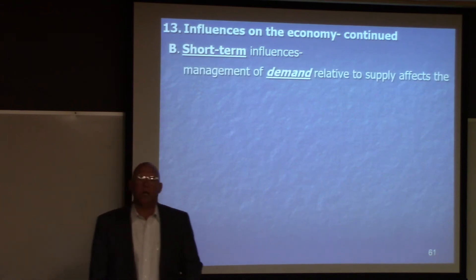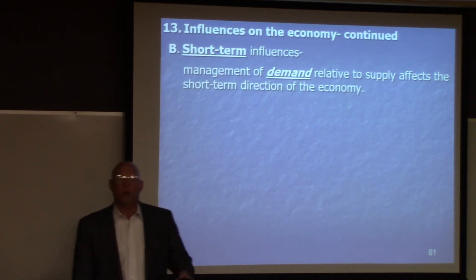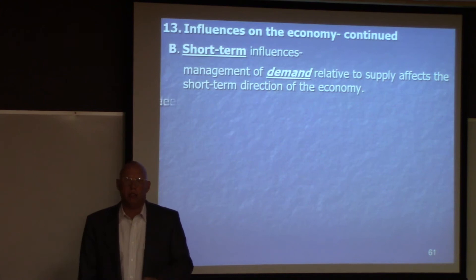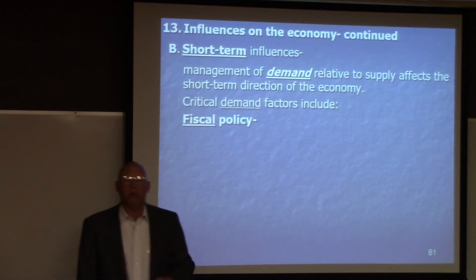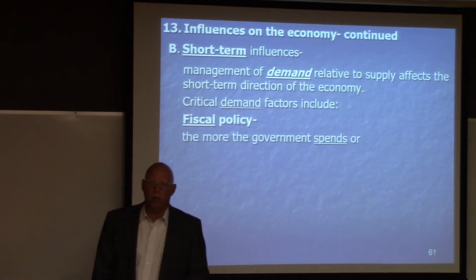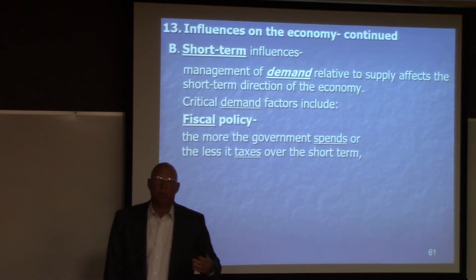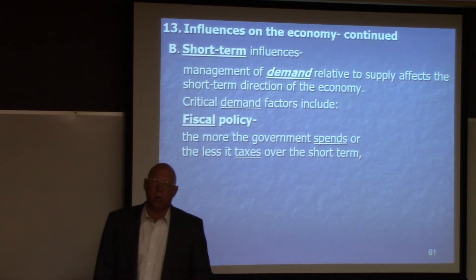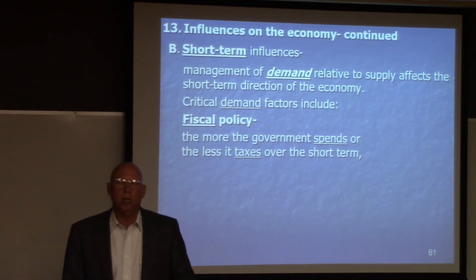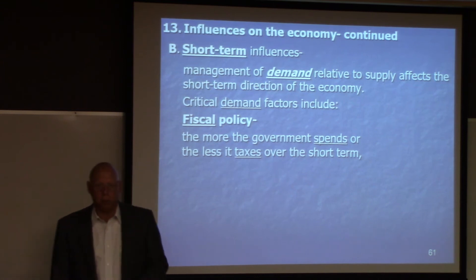What are our short-term influences? We've already talked about them — management of demand. This is where Keynes came in. Management of demand relative to supply affects the short-term direction of the economy. Critical demand factors include fiscal policy. Can we stimulate demand at least over the short-term? That's government spending or government taxing, which affects demand over the short-term. Back during the Great Depression, Keynes said you can cut interest rates — that's monetary policy — but people are afraid to spend. Somebody's got to step up and spend, and the government stepped in.